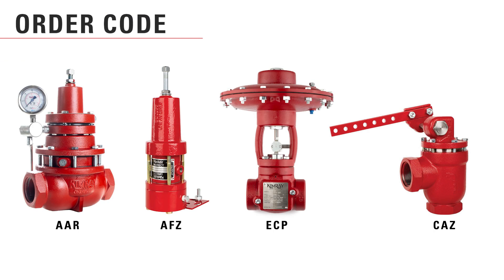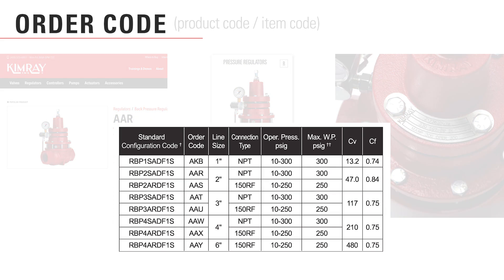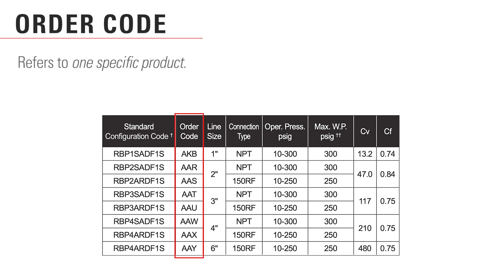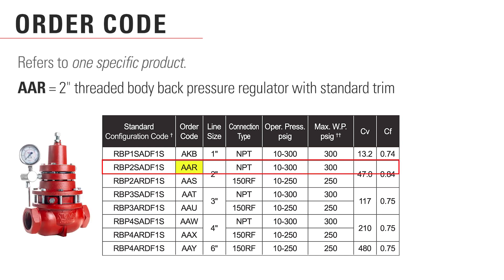The order code is the simplest, shortest code used to identify a product. You'll probably also hear it called a product code or an item code. You may see this on our website or in a catalog. However, the order code is usually not on the tag or product itself. The order code refers to one specific product. For example, when you ask a Kimray store or distributor for an AAR, that indicates a two-inch threaded body back pressure regulator with standard trim.